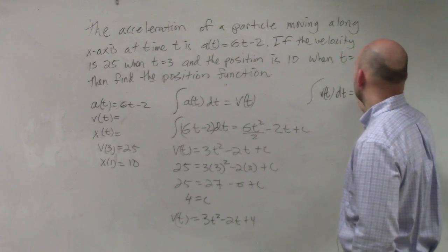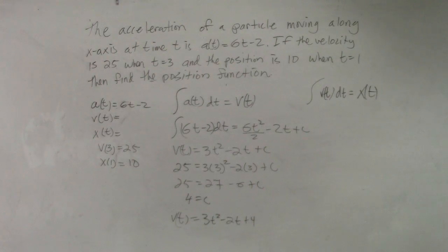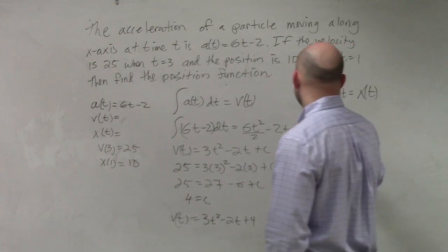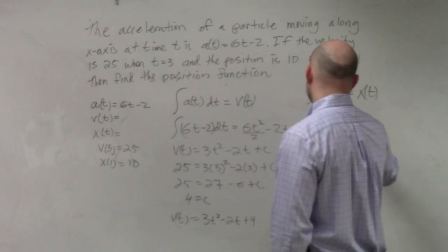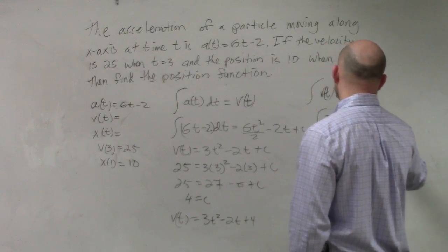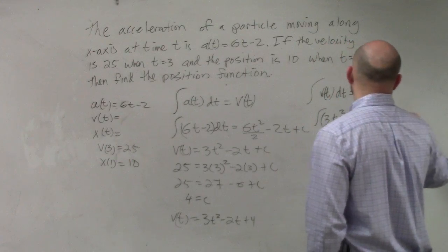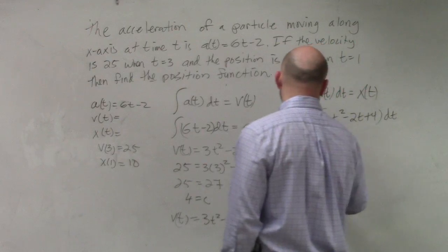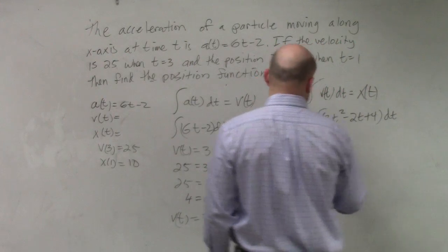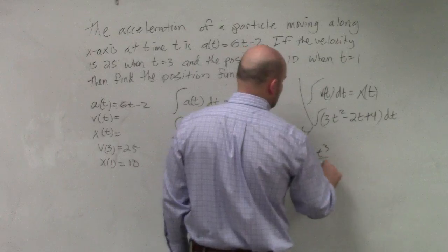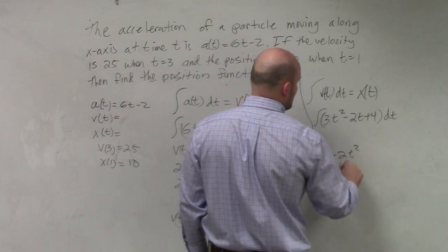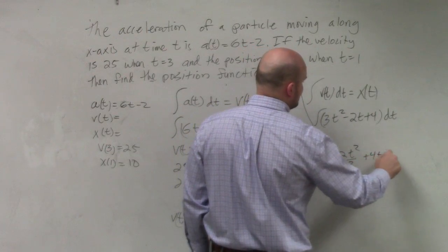of v sub t, that's going to give me x of t, right? So therefore, we just integrate this: 3t squared minus 2t plus 4 dt. And when I integrate, I get 3t cubed divided by 3 minus 2t squared divided by 2 plus 4t plus c.